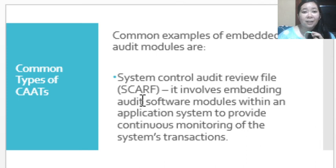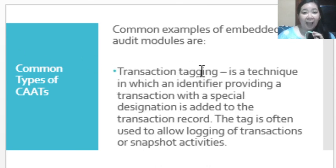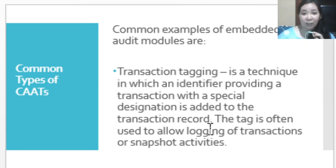Another embedded audit module is the System Control Audit Review File (SCARF), which involves embedding audit software modules within the application system to provide continuous monitoring of the system's transactions. Another is transaction tagging — an identifier which provides a transaction with a special designation added to the transaction record. This tag is often used to allow logging of transactions or snapshot activities, and only those identified transactions will be tagged.